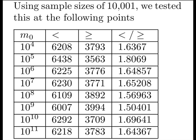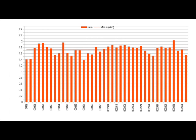So that's what we did. Using sample sizes of 10,000, we tested this at the following points. M0 is our index. The next column is less than the logarithm. The next column is greater than or equal to. And the last column is the ratio. And you see, it's greater than 60% of the time it's less than.